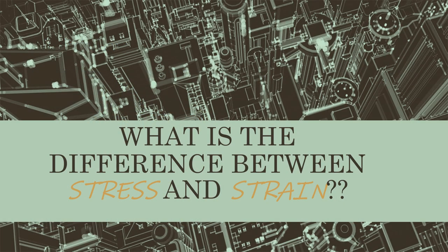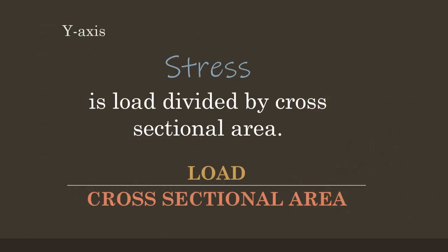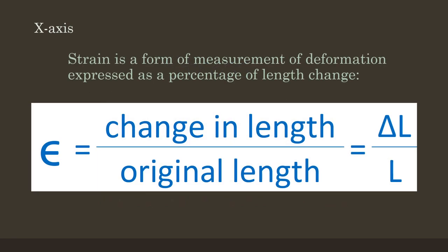So stress and strain kind of sound alike. What exactly is the difference between stress and strain? Stress is the measure of force applied to an object, usually expressed in terms of force per unit area. Strain is a measure of deformation, often expressed as the ratio of change in length or an angle to original length or angle. Stress is your y-axis and it is load divided by cross-sectional area. Strain is your x-axis and it is change in length divided by original length.